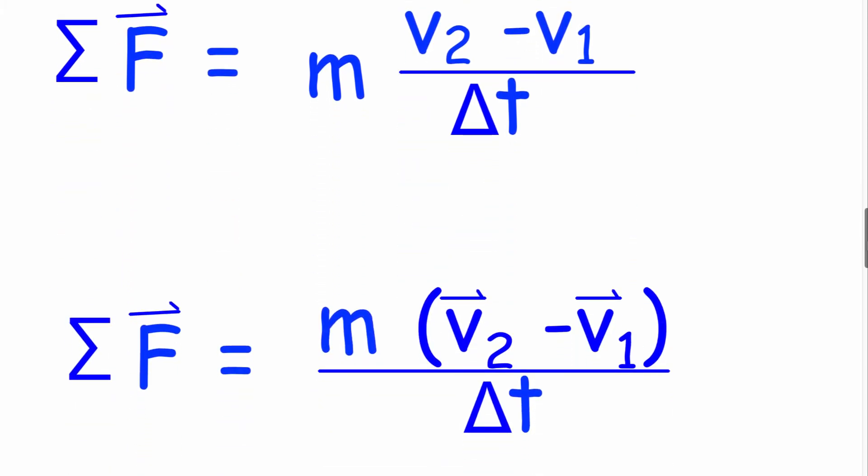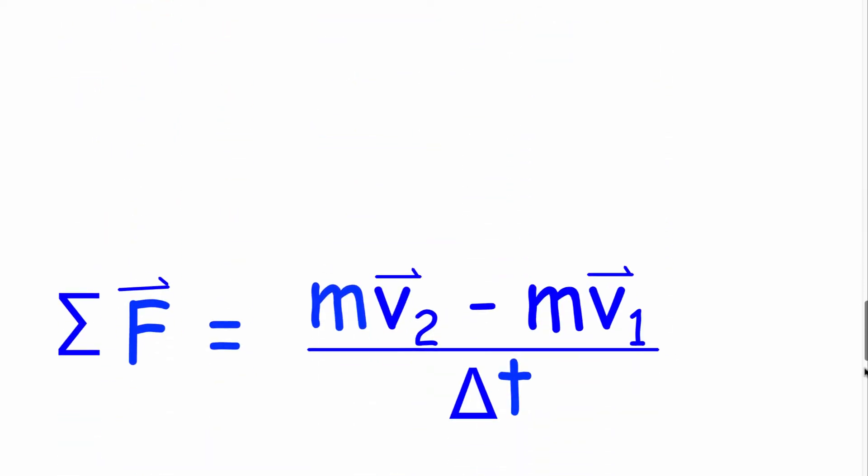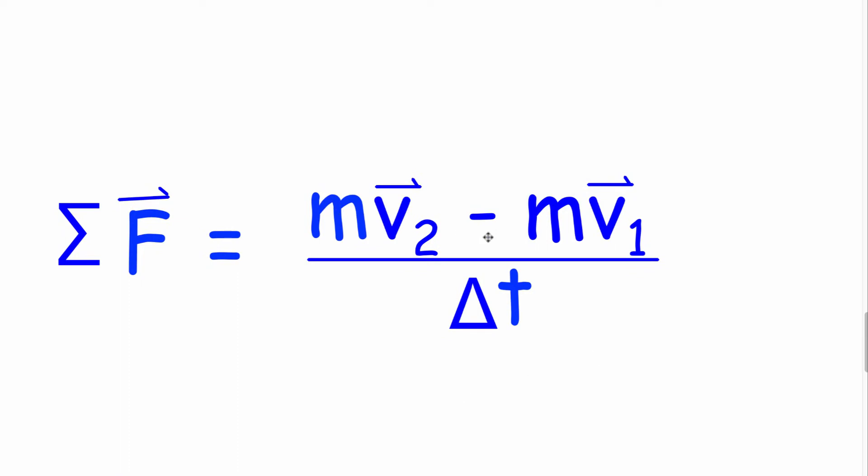I'm simply going to take my mass and multiply it through the changes of velocity, which would give us mv2 minus mv1. Momentum is mass times velocity, so this would actually be momentum 2 and momentum 1.